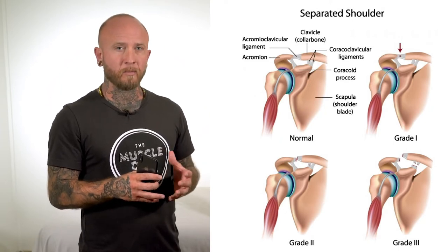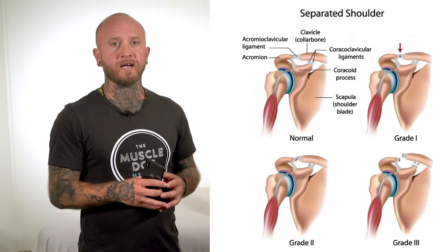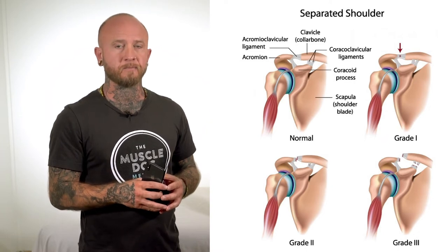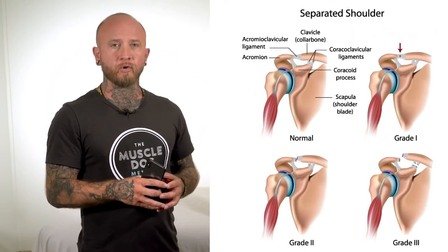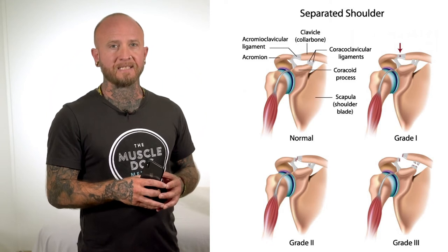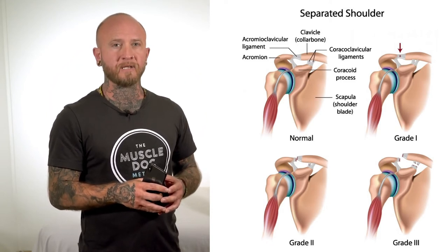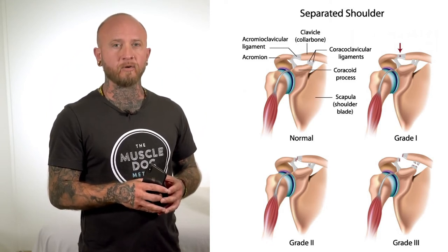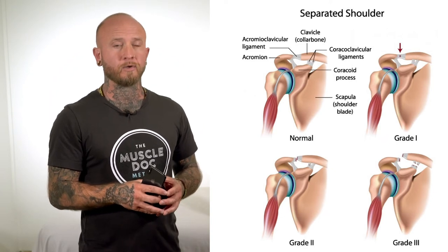A step deformity may be apparent with Grade 3, 4, and 5 injuries. Grade 6 involves full rupture of both the AC and CC ligaments, with the clavicle being displaced inferiorly, or downwards.